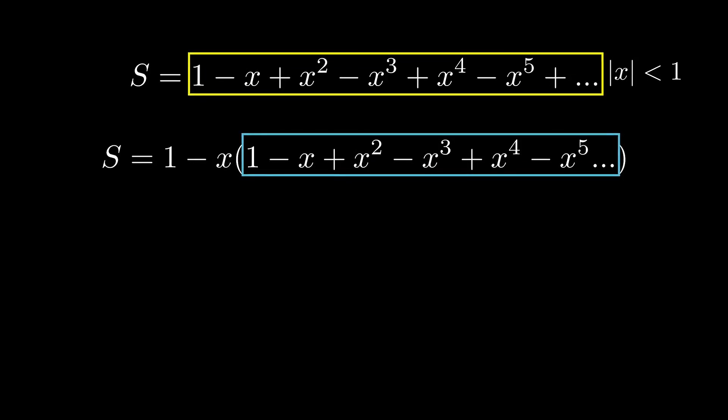You might say that the last term is missing, but since our series goes on forever, we can ignore that missing term because it will become zero eventually. So we end up with sum equals to 1 minus x times sum. Solving for the sum, we find 1 over 1 plus x.